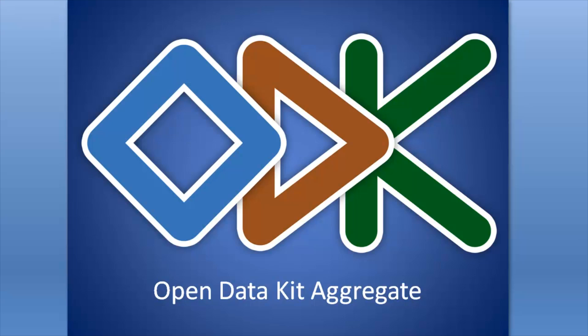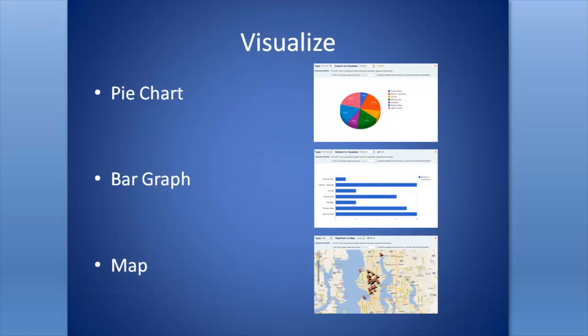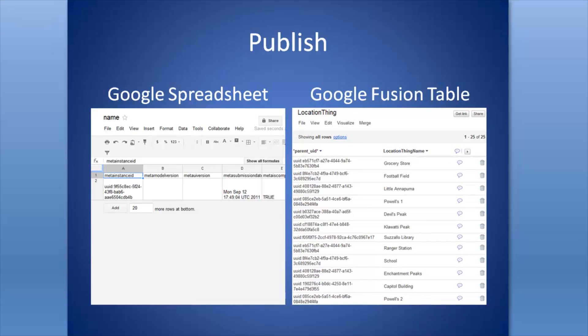There are three main features of ODK Aggregate: Visualize, Export, and Publish. Visualize allows you to view your data in a pie chart, bar graph, or on a map. Export allows you to put your data into a CSV file for Excel or a KML file for Google Maps. Publish allows you to stream your data to Google Fusion Tables, Google Spreadsheets, or Google Maps.